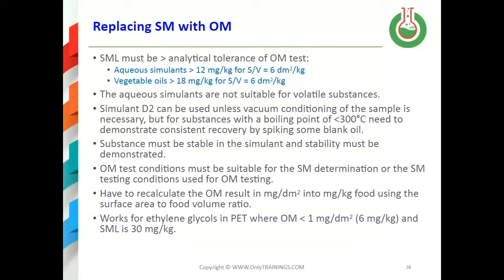Overall migration test conditions must be suitable for the specific migration determination — in other words, you have to use the more severe specific migration testing conditions to do your overall migration testing if you're going to use this particular form of substitution. You also have to recalculate the overall migration result from mg per dm² into mg per kg food using the surface area to volume ratio, or the standard of 6 dm²/kg.